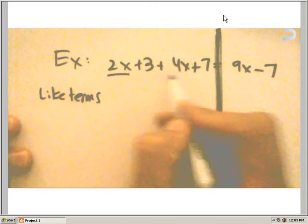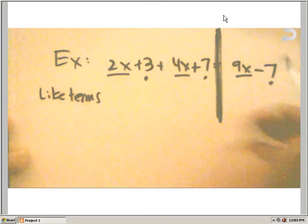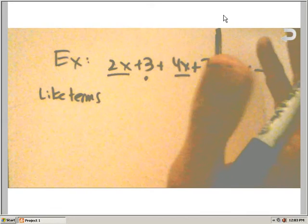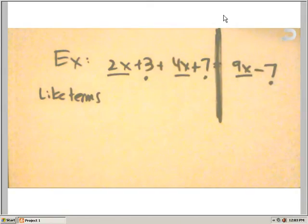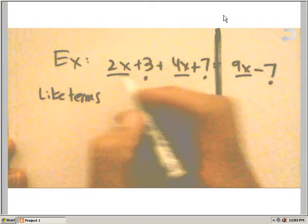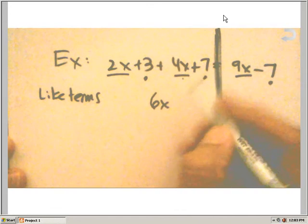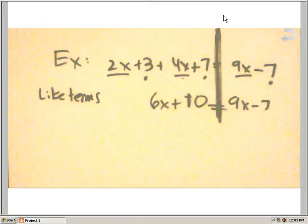All the x's are like terms, and all of the constants are like terms, but the 2x and the 4x can combine in a whole different way than they combine with the 9x. Sooner or later, I want to get them all together at some point in time, but I can't do that immediately because of the equal sign. They're on different sides of the balance scale. However you want to think about it, these combine very easily. 2 and 4 very easily make 6, and 3 and 7 very easily make 10.